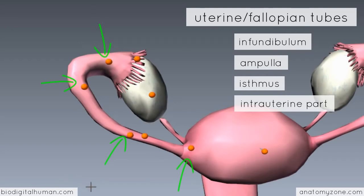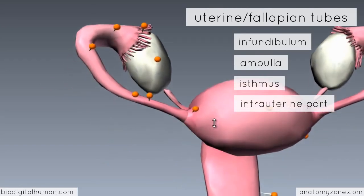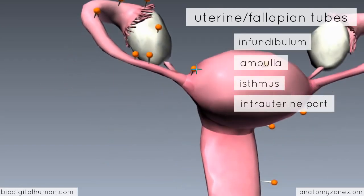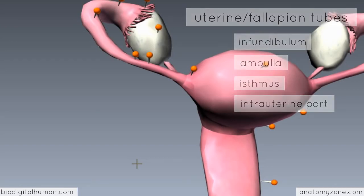The medial third of the uterine tube is called the isthmus, and it's the narrowest part of the tube. It opens up into the uterus. Where the fallopian tube opens up into the uterus is called the intrauterine part — it's inside the uterus and opens up into the cavity of the uterus.